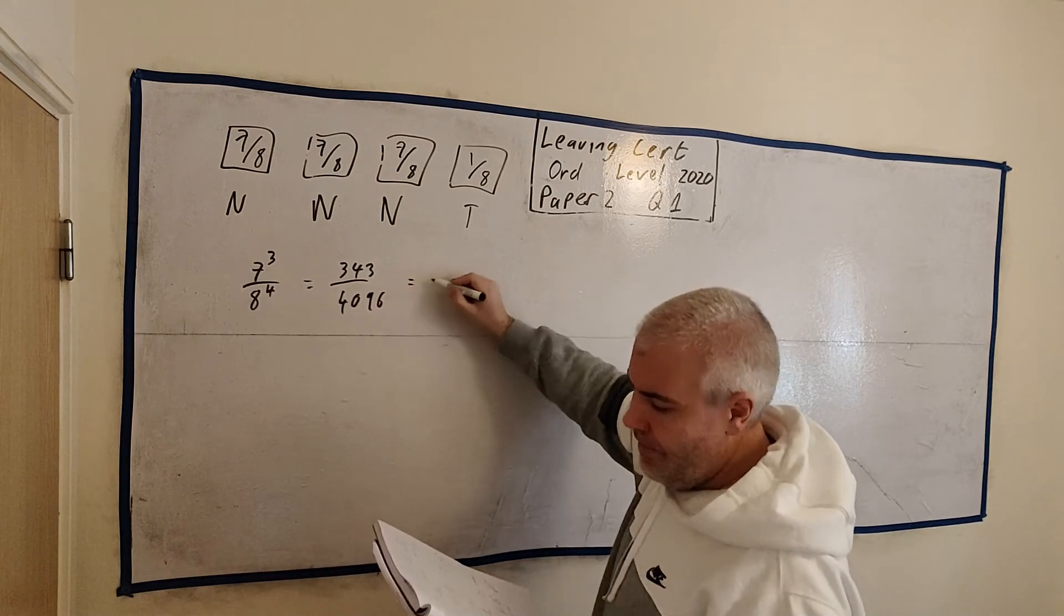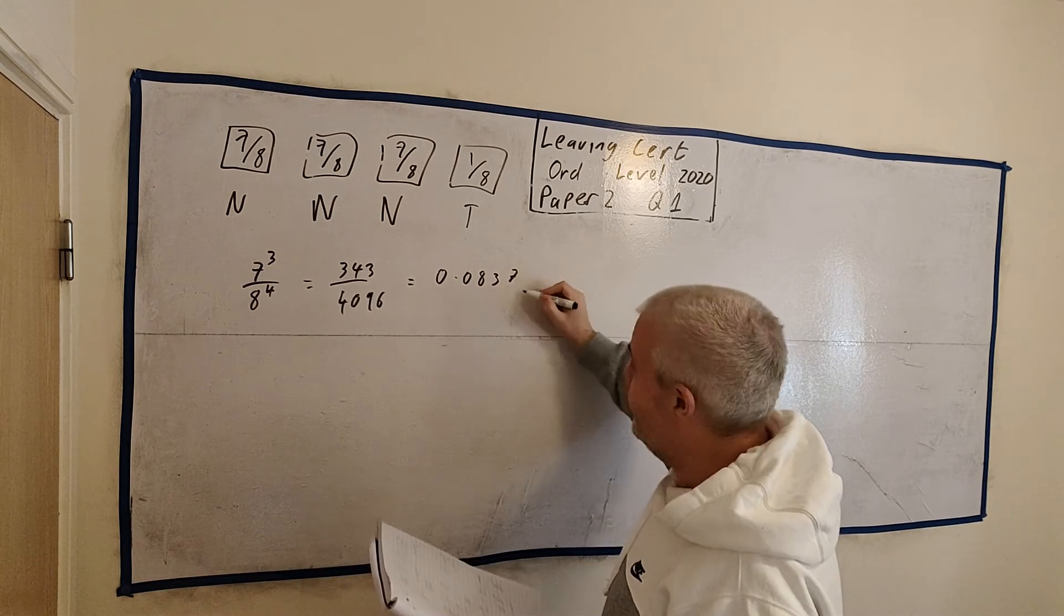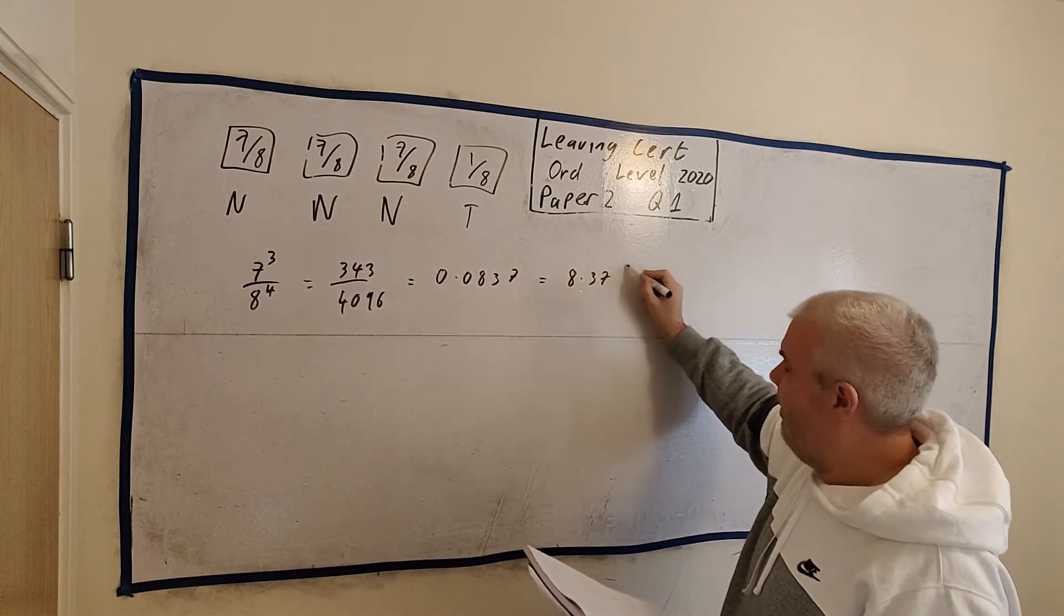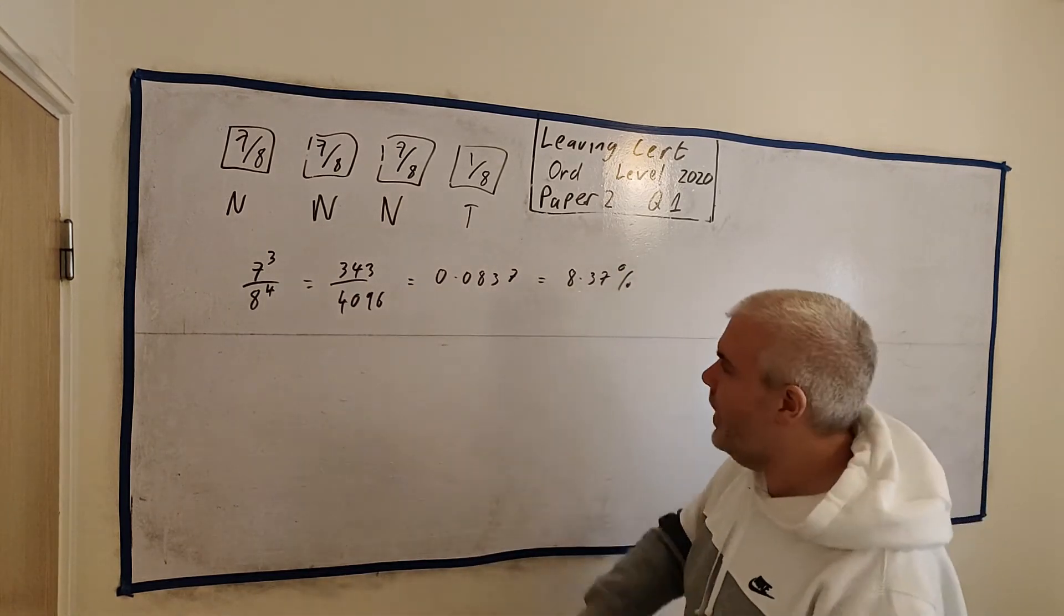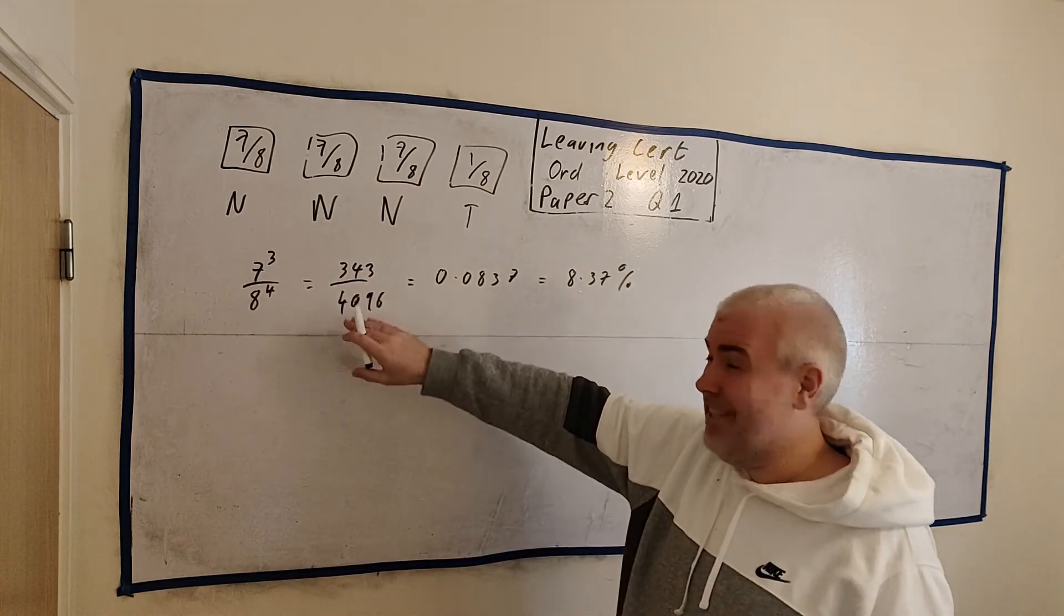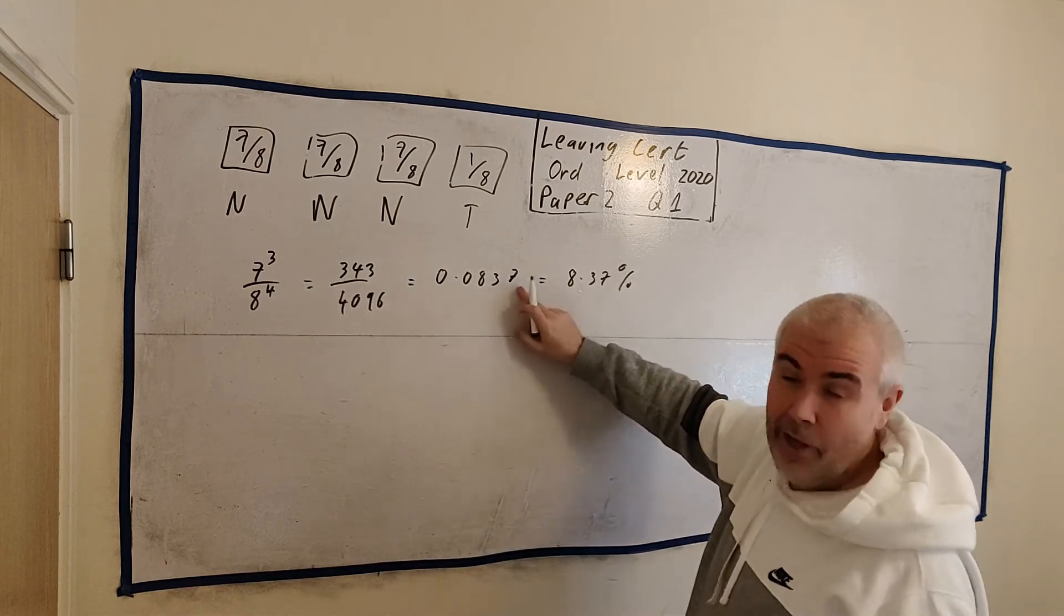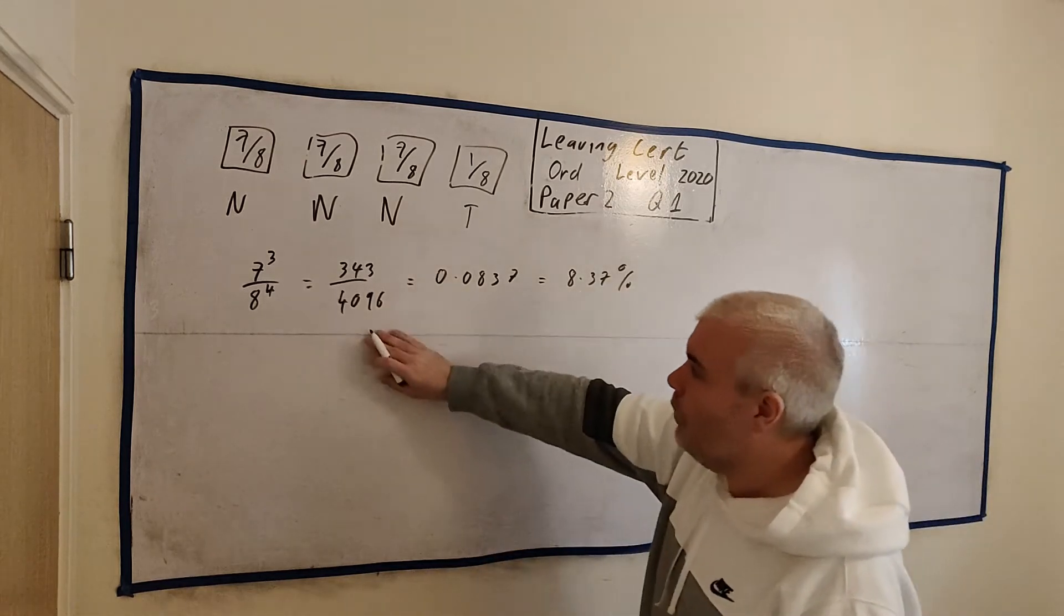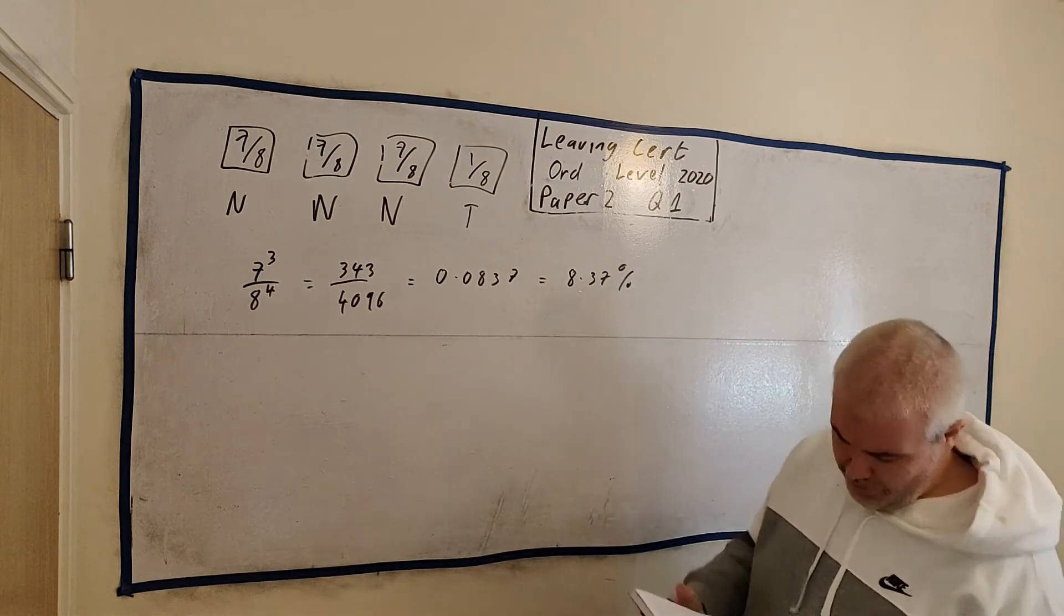A calculator will do this for us. This will come out as 343 divided by 4096, which is the same as 0.0837, which is also the same as 8.37%. I don't think it asks us how they want it written. I'd leave it as this because it's exactly right. You might want to leave it like this, but I have to round off a few numbers. Or you might leave it like this. All of these will be full marks in the exam, if I haven't made a mistake.